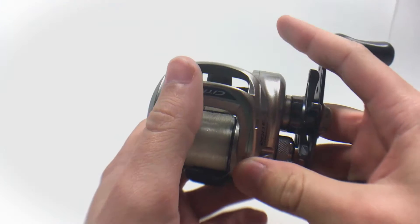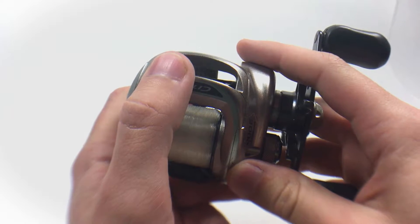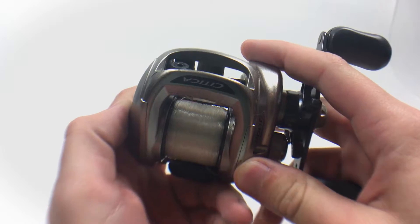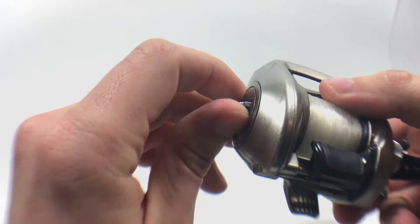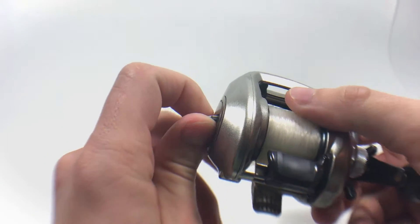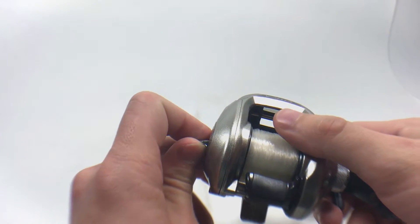Here are some of the specs. 7.8 ounces, 6.2 to 1 gear ratio, SVS Infinity braking system, super durable frame, aluminum spool, holds plenty of line, and aluminum star drag.